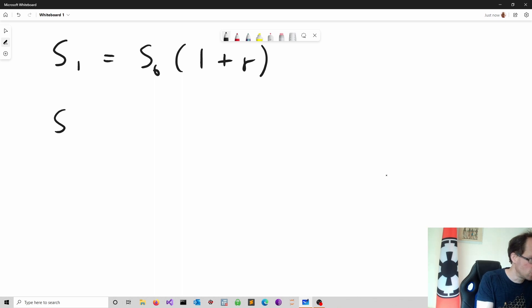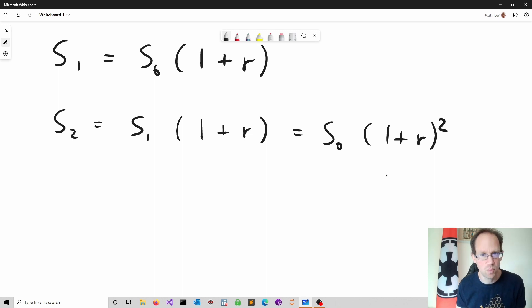It is straightforward to obtain the value of savings at any point T simply by iterating this relationship. For instance, I can write S2 as S1 times 1 plus R and S1, I can just insert this equation, is S0 times 1 plus R times 1 plus R, so it's 1 plus R to the power of 2. Now I can easily generalize this to any point in time and obtain a closed-form solution.